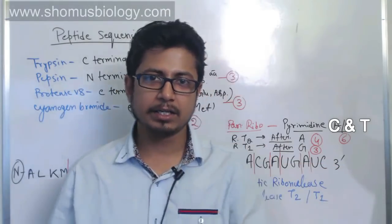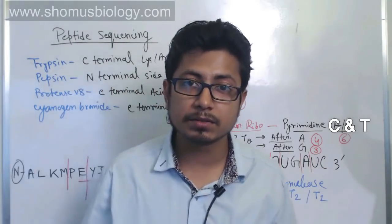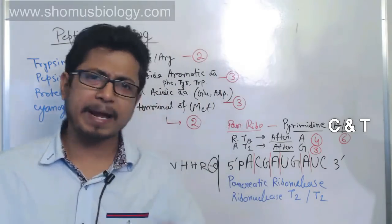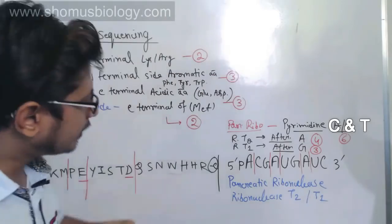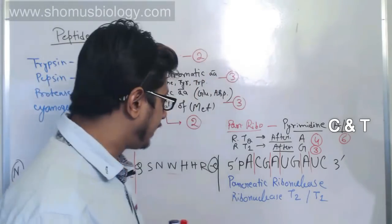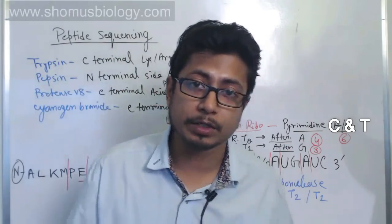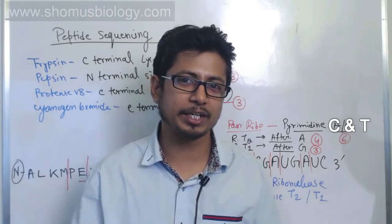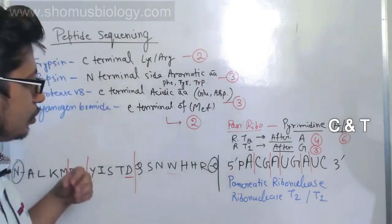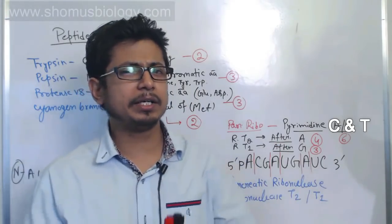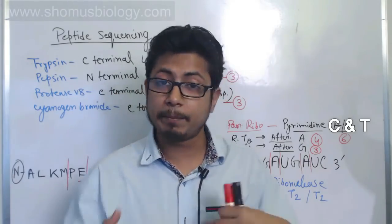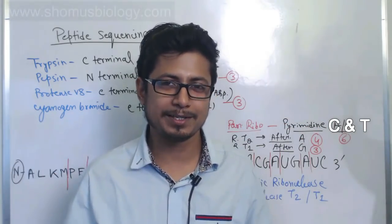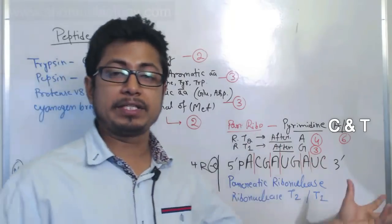Questions can be asked with individual enzymes alone or with all three combined, asking how many total fragments are generated. A more difficult variation gives you the fragmented sequences first and asks you to reconstruct the original peptide or nucleotide sequence. In that case you need to know the number of fragments and which enzymes were used, figure out where each enzyme cut, and superimpose all fragments to determine the total polypeptide or nucleotide sequence.